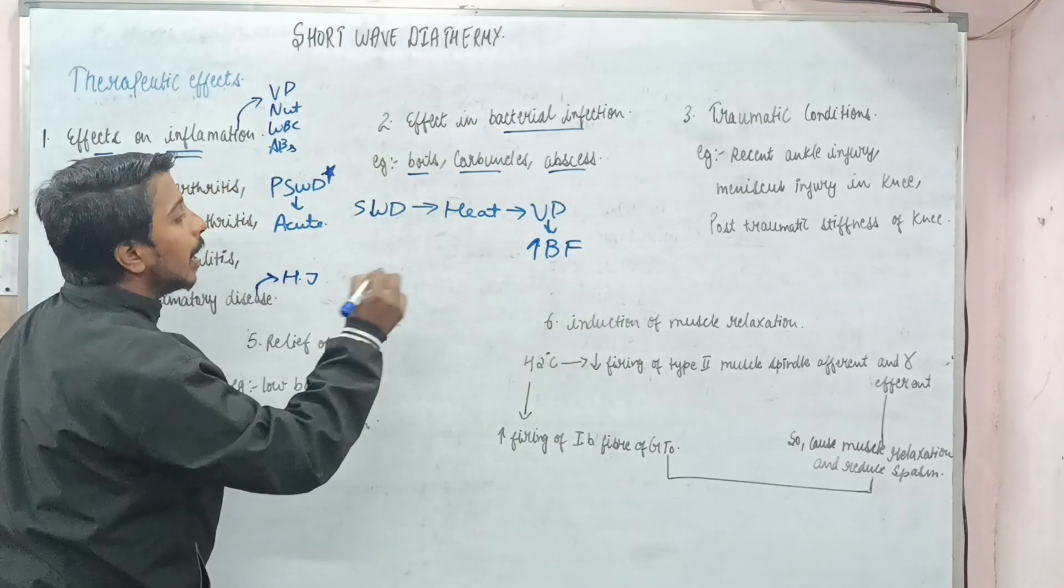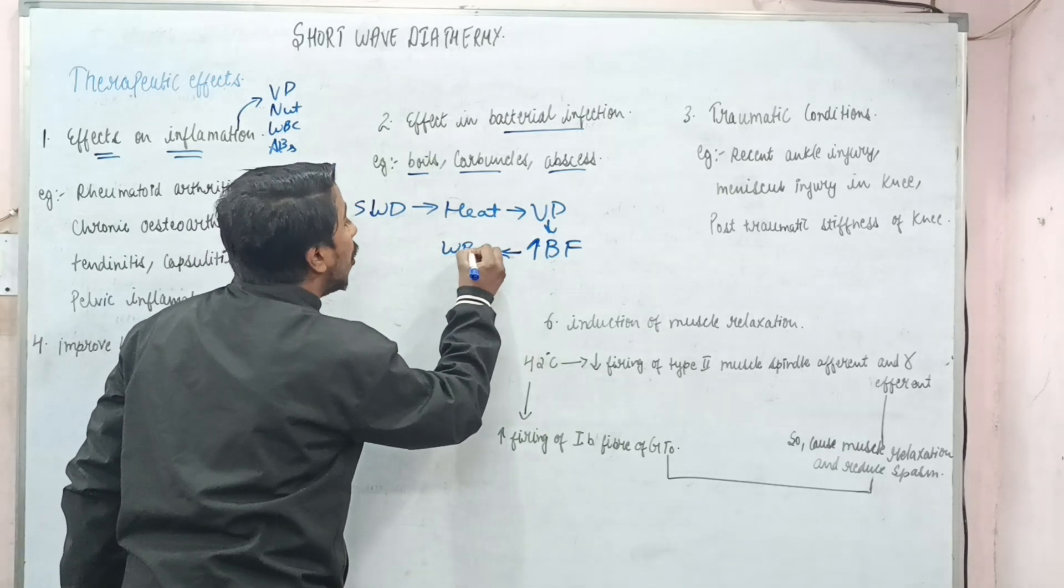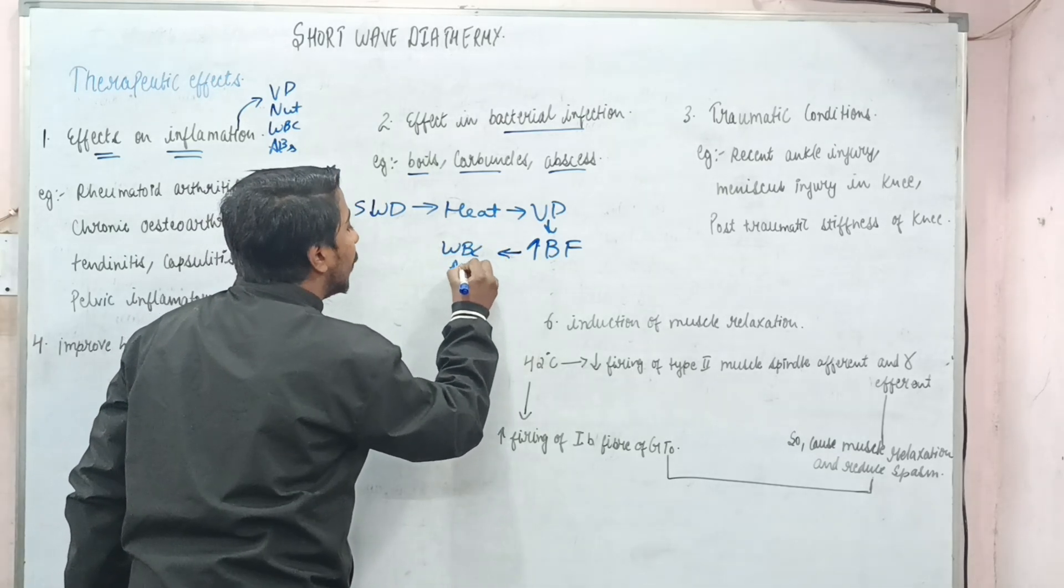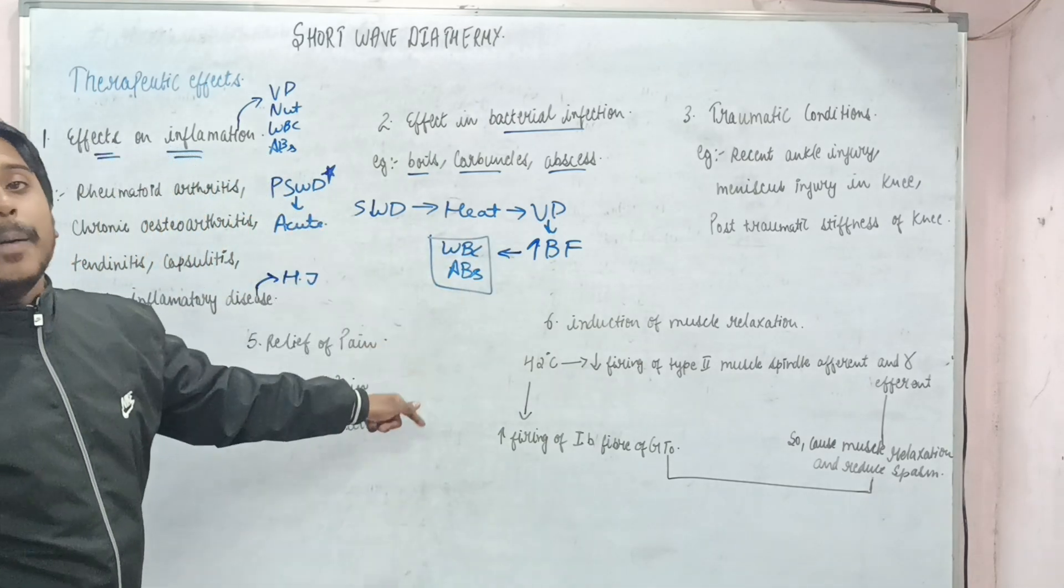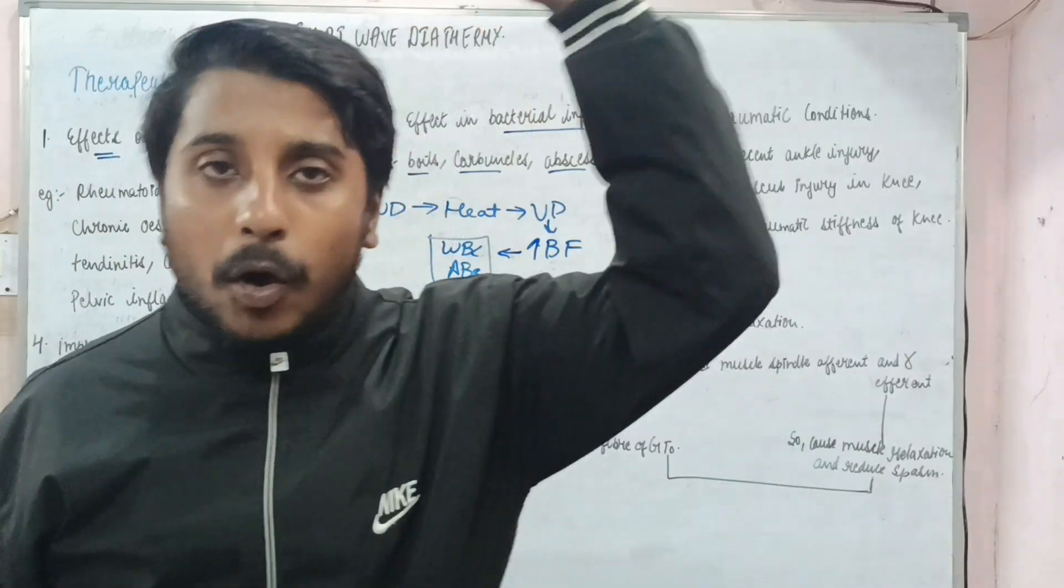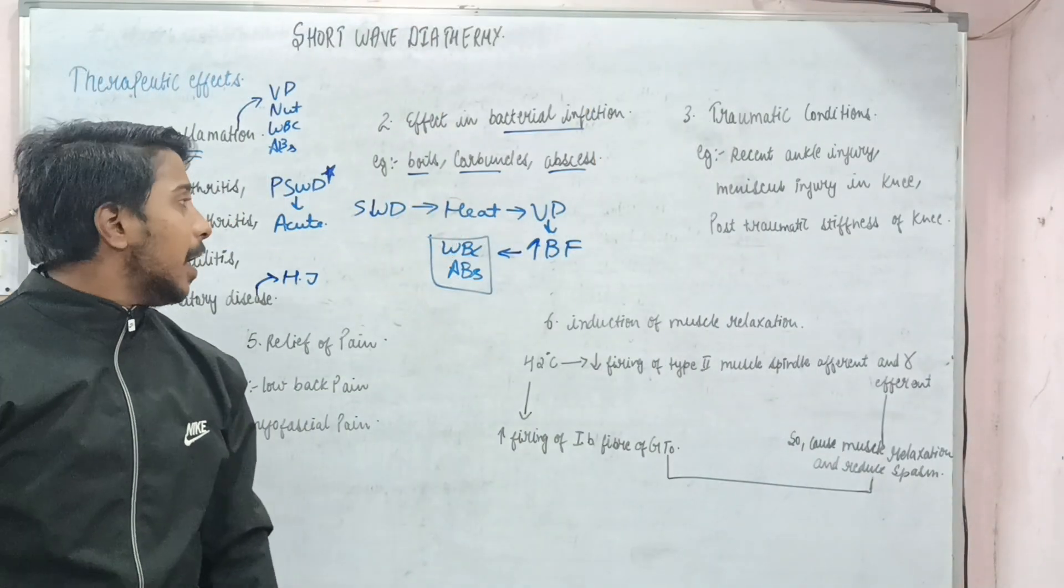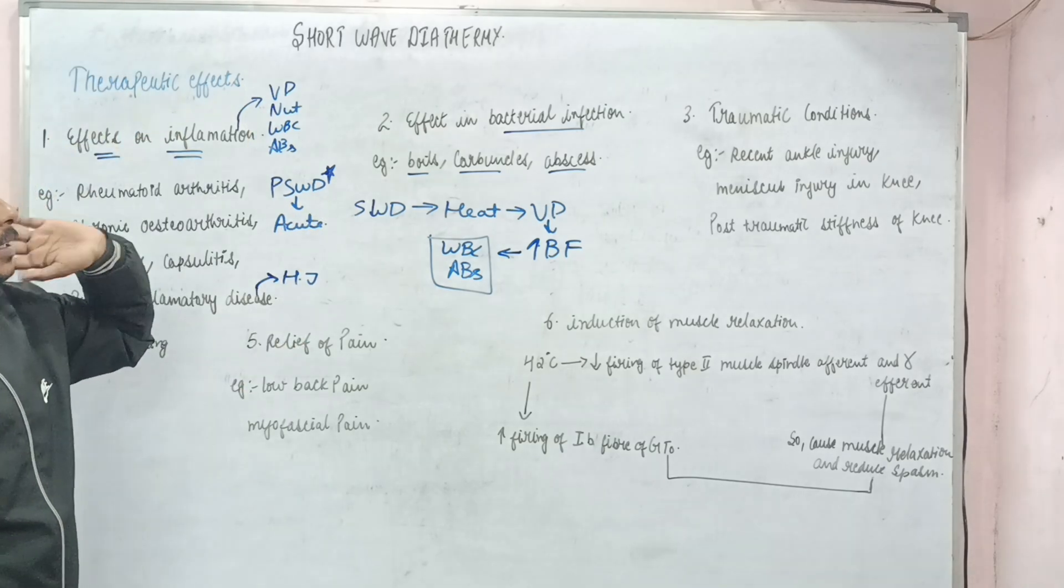Blood flow will increase, which will increase the concentration of WBC and antibodies, which will fight with the bacteria and kill the bacteria. Hence, bacterial infection is cured or the symptoms are reduced. All these things are going to repeat.